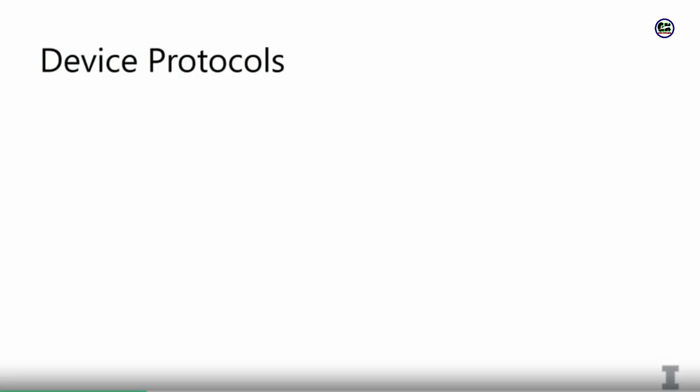First of all, if you want your device to do routing, some very common routing protocols are OSPF and ISIS. Those are protocols used within ISP boundaries. If you're routing outside of your network, you're going to use BGP. These are protocols that you can configure on your device to achieve those sorts of objectives.